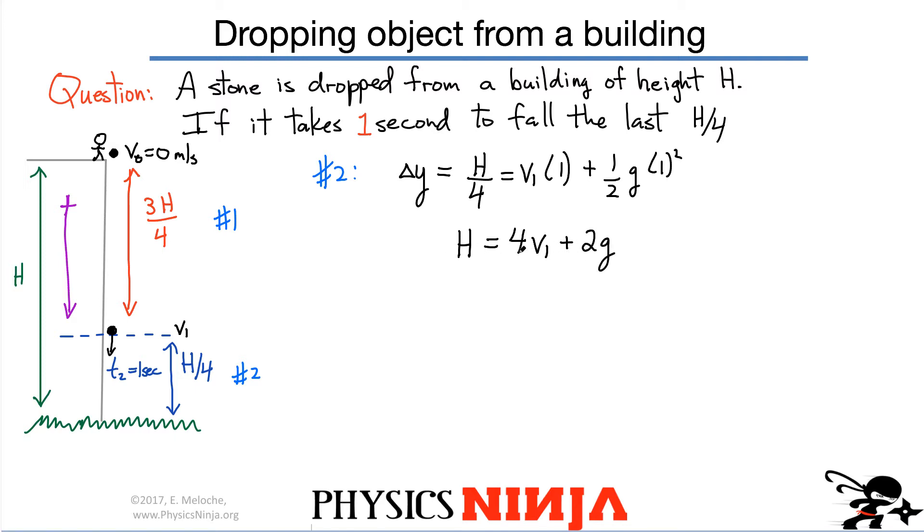Now it might look like the units don't make sense here, but again, it's because we've multiplied by one second. So a lot of those terms have vanished. All right. So this is our equation really for part 2. That's going to be an important equation. So we have two variables here, H and V1 that are tied, that are linked together here. So we need at least one more equation that links H and V1 in order to solve this problem.